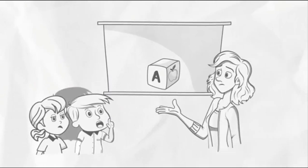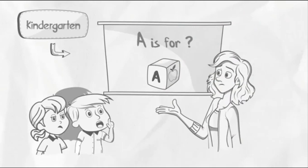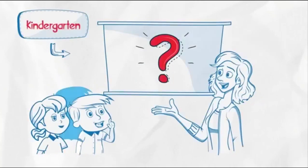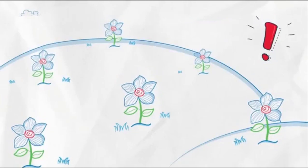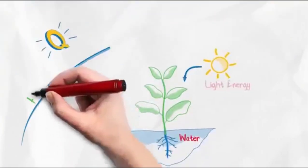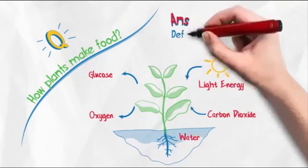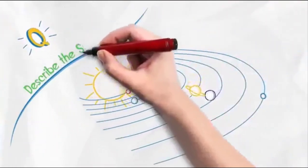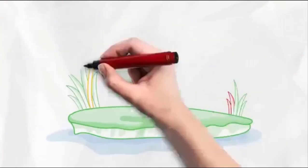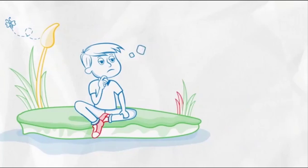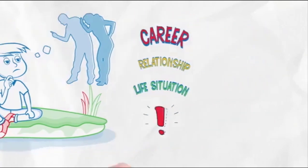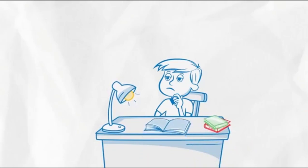How does the education system make every child the same? Going back to the Apple example — kindergarten lessons gave us the answer 'A is for Apple.' Answers make you the same; questions make you different. Right from kindergarten, the education system keeps giving answers instead of asking questions. Instead of asking how plants make food, the teacher gives the definition of photosynthesis. Instead of asking children to describe the sun, the teacher tells them it is a ball of fire. Through their years in school, children lose the capability to think on their own and become dependent on others for answers, losing their true potential.